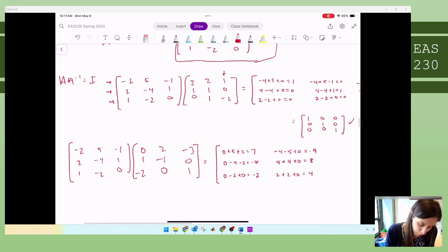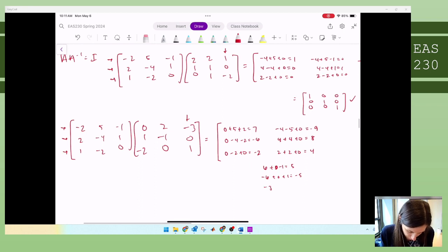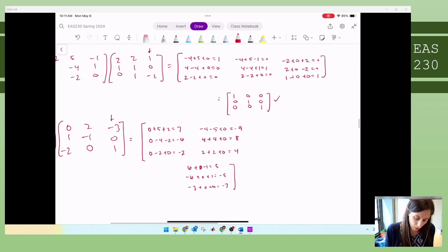And then my third system, my third column here. I'm going to do that below. Six plus zero minus one is five. Row two, negative six plus zero plus one, negative five. And then row three, negative three plus zero plus zero, negative three. So there we go.